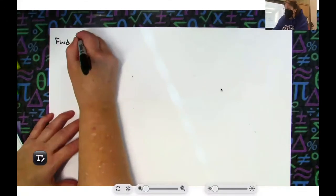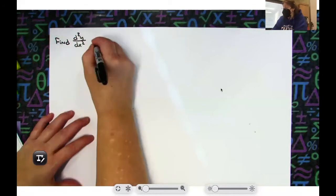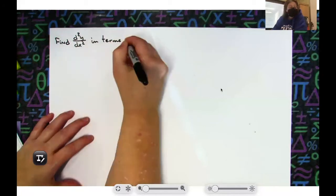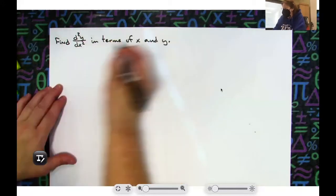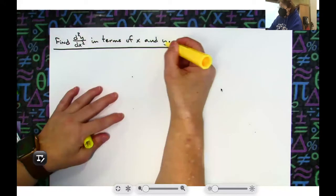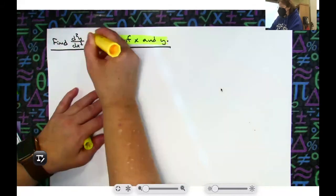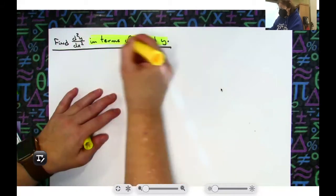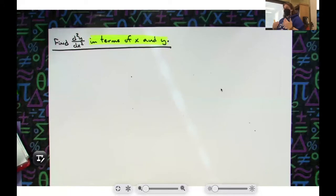We need to find the second derivative in terms of x and y. That's the important part — in terms of x and y. So when you get done, your second derivative can only have x's and y's in it. If your second derivative has a y prime in it, you're going to have to replace it. Your final second derivative can only have x's and y's.